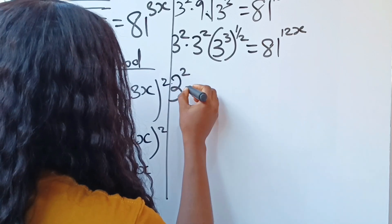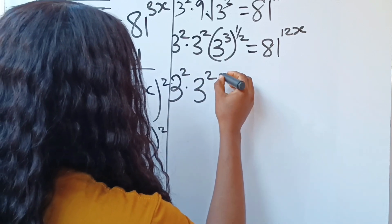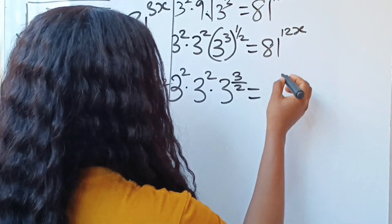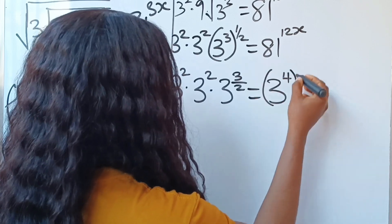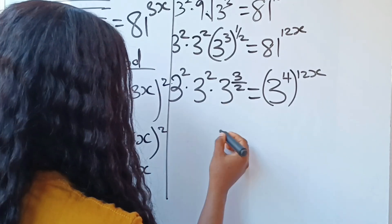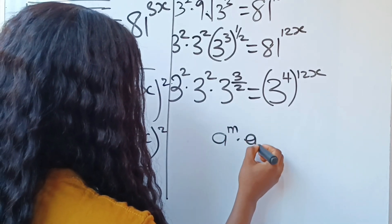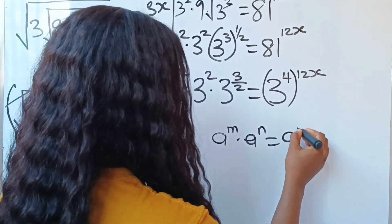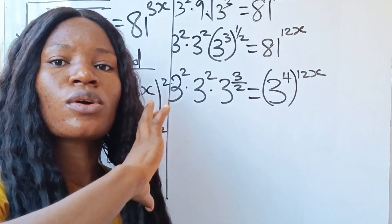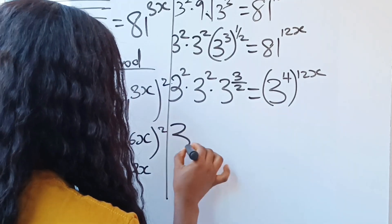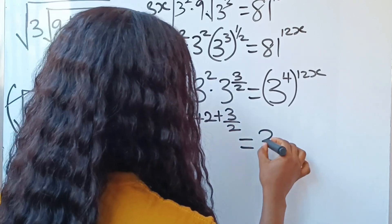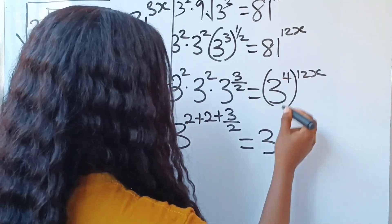Now we have 3 to the power of 2, multiplied by 3 to the power of 2, then multiplied by 3 to the power of 3 times one-half, which gives us 3 over 2. This is equal to 81, which is the same as 3 to the power of 4, raised to the power of 12x. When you have a to the power of m multiplied by a to the power of n, this equals a to the power of m plus n. So we pick one base and add the powers: 2 plus 2 plus 3 over 2, equals 3 to the power of 4 times 12, which gives us 48x.